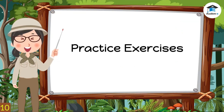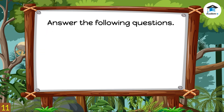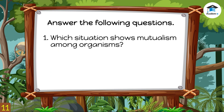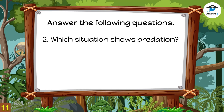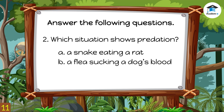To check how well you understood the lesson, let us have a short exercise. Question 1: Which situation shows mutualism among organisms? A) A cat eating a rat, or B) A bird riding on top of a carabao. The correct answer is B. A bird rides on top of a carabao, and in turn, the bird eats the ticks off the carabao. Question 2: Which situation shows predation? A) A snake eating a rat, or B) A flea sucking a dog's blood. The correct answer is A — the snake attacks the rat for food. The snake is the predator and the rat is the prey.